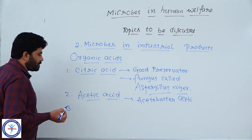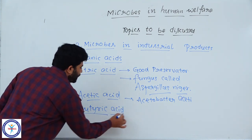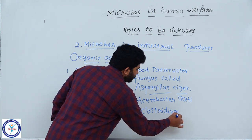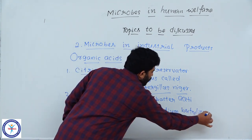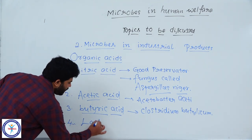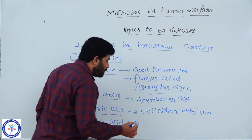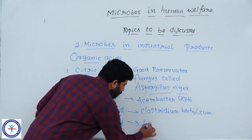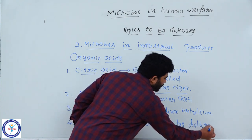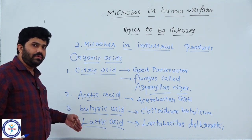The next organic acid is butyric acid, also a very important organic acid. Butyric acid is also obtained from a bacterium called Clostridium butylicum. Clostridium butylicum is a bacterium from which we get butyric acid. The next one is lactic acid — already we discussed lactic acid and its importance. This lactic acid is obtained from a bacterium called Lactobacillus delbrueckii. Lactobacillus delbrueckii is a bacterium from which we get lactic acid. All these are different organic acids we generally use in our daily life.